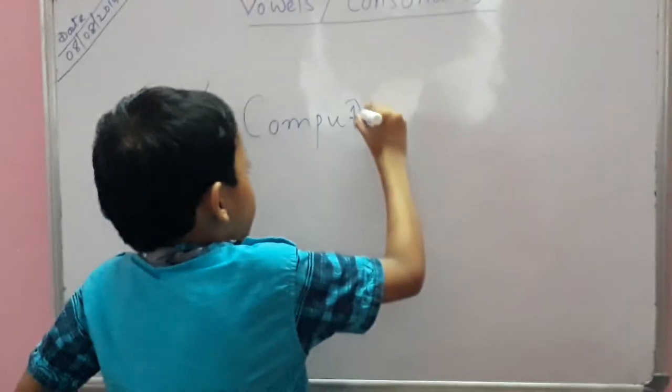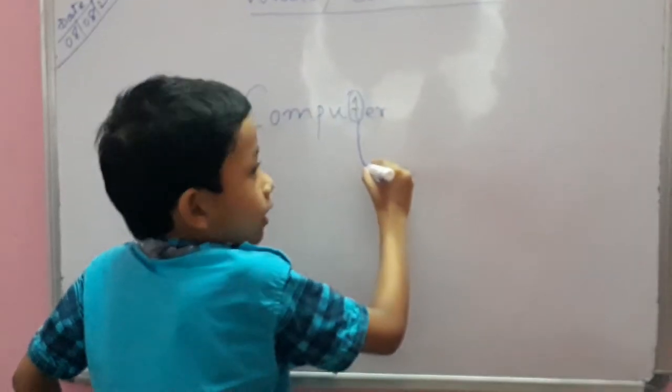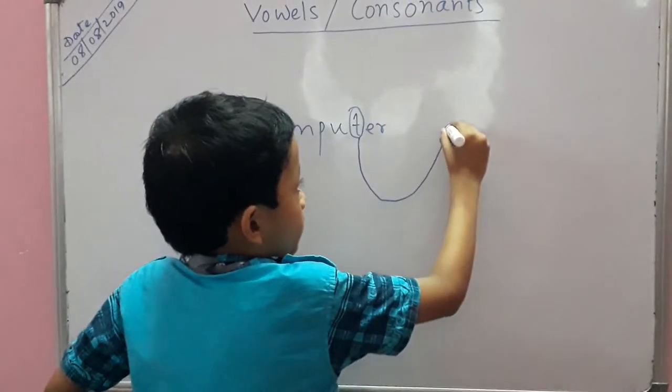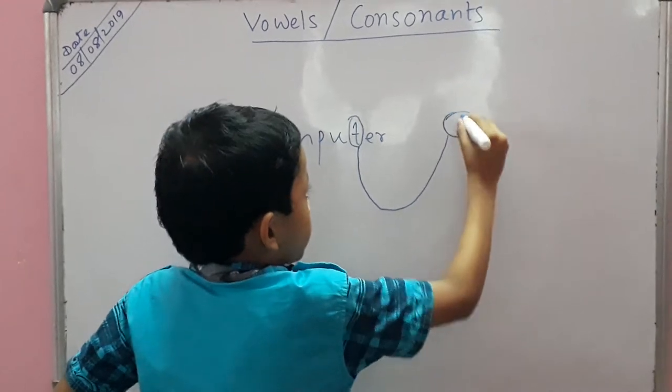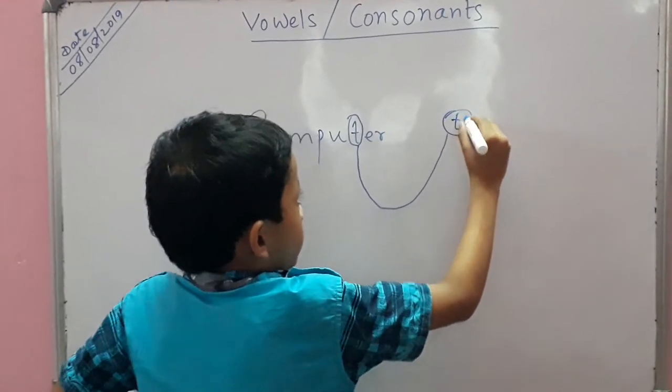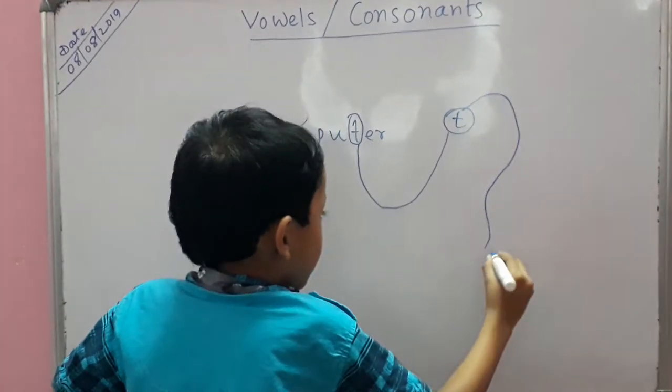Okay, look. This one is T. T is the one. What is T? T is the consonant. T is consonant.